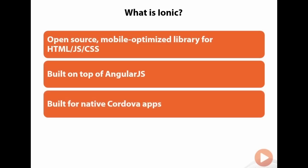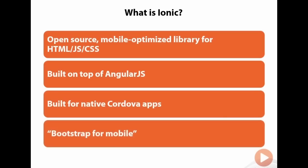Ionic is specifically built for Cordova apps and makes use of native device features. Conceptually, you can almost think of Ionic as Bootstrap for mobile. Like Bootstrap, Ionic provides a framework, out-of-the-box JavaScript components, and CSS. It provides developers that solid foundation upon which to build their apps, and it can easily be customized to meet your specific needs.